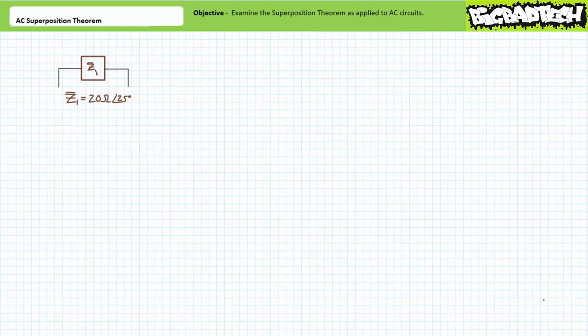Good day and welcome to Big Bad Tech. I'm instructor Jim Pytel and today's topic of discussion is the superposition theorem as applied to AC circuit analysis. Our objective is to learn to employ the superposition theorem in an effort to solve for desired electrical quantities for AC circuits with more than one source.